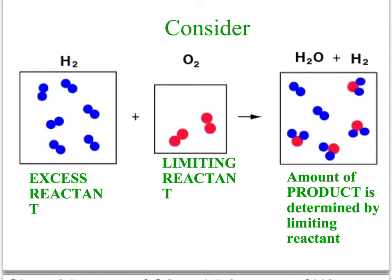The excess reactant is a reactant in which some of that substance is left over. The limiting reactant is the reactant that is used up first — in this situation, that would definitely be the oxygen.